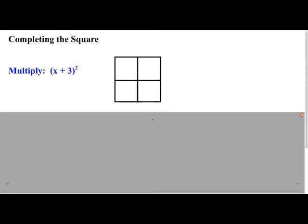So remember what that means is, it means we're going to literally take x + 3, I'm going to write that down here, as part of our generic rectangle, and we're going to multiply it by itself. So there's the other x + 3.